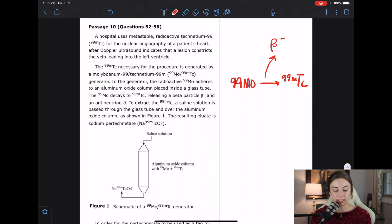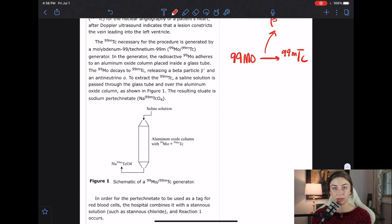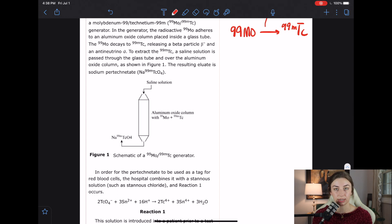To extract the 99 MTC, a saline solution is passed through the glass tube and over the aluminum oxide column as shown in Figure 1. The resulting eluate is sodium pertechnetate. Okay, so the figure, I'm just going to glance at it. I noticed that it's just doing what it was talking about in the passage. And the whole point of it is to get this 99 MTC out, which is like right here or right here, whichever way you want to look at it.